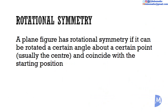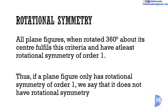A plane figure has rotational symmetry if it can be rotated a certain angle about a certain point — usually the center — and coincide with the starting position. All plane figures, when rotated 360 degrees about their center, fulfill this criteria. All plane figures have at least rotational symmetry of order one. If a plane figure only has rotational symmetry of order one, then we say it does not have rotational symmetry.